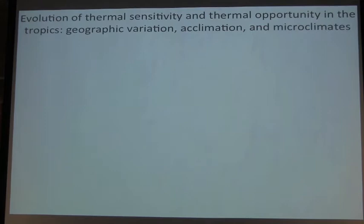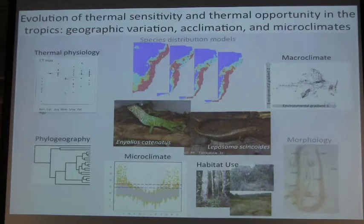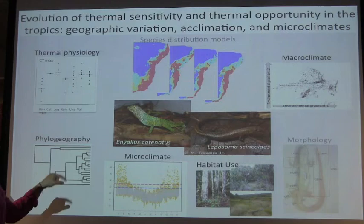Second part — this is shorter, I promise. The next thing I looked at was thermophysiology: whether it's a possible mechanism that explains distributions and phylogeographic patterns. The chapter title is 'Evolution of thermosensitivity and thermoopportunity in the tropics: geographic variation, acclimation, and microclimates.' I'm going to talk about both species, thermophysiology in the context of phylogeography, and microclimates and habitat use.